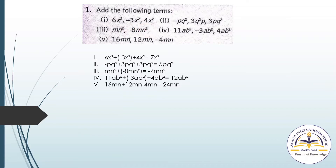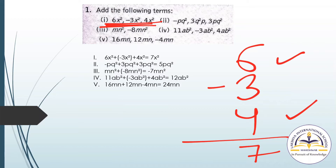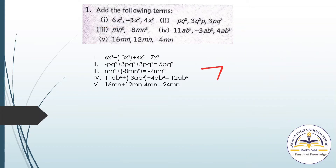Now what you have to do? Take the coefficients: 6, −3, and 4. When you solve this: 6 plus 4 is 10, 10 minus 3 is 7. The variable term is x², so the answer is 7x².